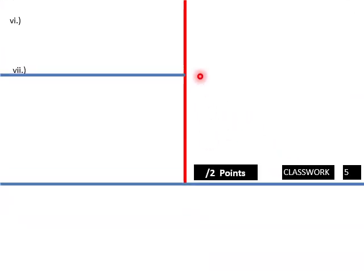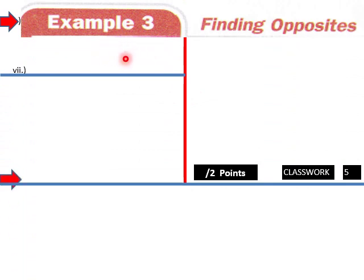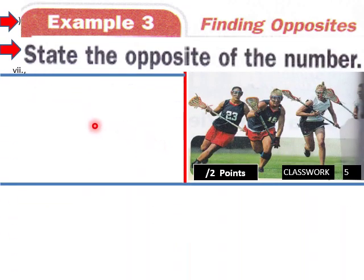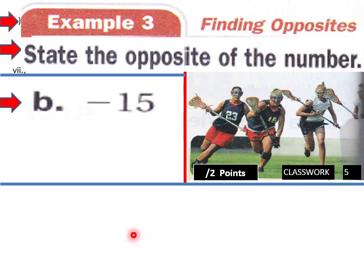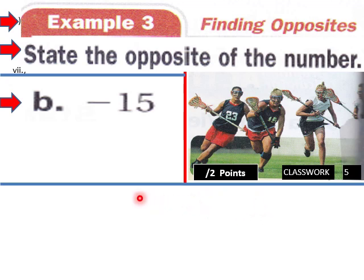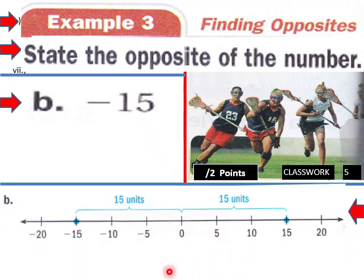Finding opposites again: state the opposite of negative 15. Negative 15 is 15 units to the left of the origin, or zero. So the opposite would be to the right of the origin, 15 units, which would be positive 15. The opposite of negative 15 is 15.